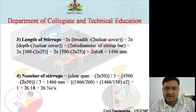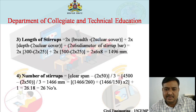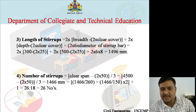Length of stirrups: 2 × (breadth − 2 × clear cover) + 2 × (depth − 2 × clear cover) + 2 × 6 × diameter of stirrup bar = 2×(300−2×25) + 2×(500−2×25) + 2×6×8 = 1496 mm. Number of stirrups: (clear span − 2×50) / 3 = (4500 − 100) / 3 = 1466 mm spacing calculation, giving a total of 24 numbers of stirrups along the length of the beam.